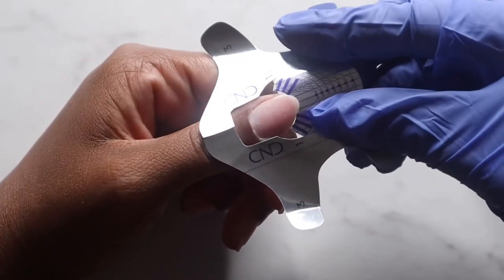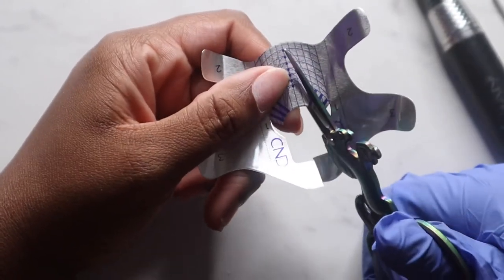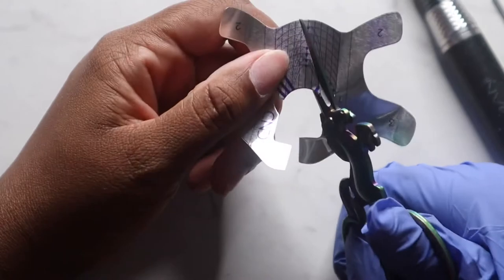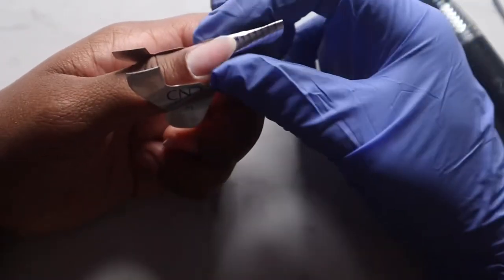I then start to fit my CND forms on my finger. Make sure to size the form so it fits snug to the finger. As you can see, this fits perfectly nice and snug.